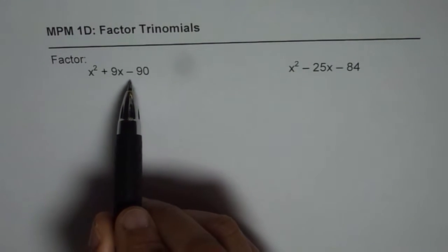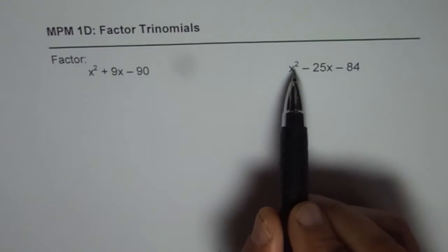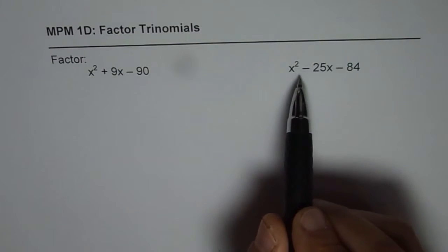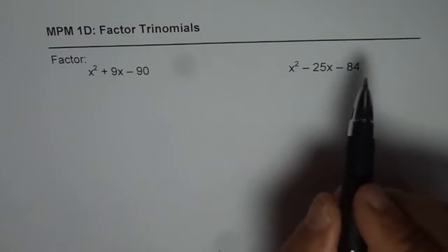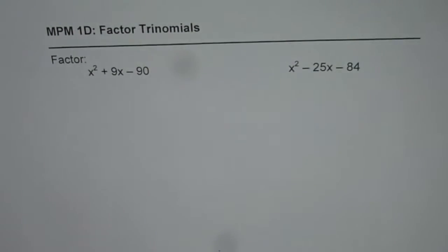So we have x squared plus 9x minus 90 as one equation. The other one is x squared minus 25x minus 84. I should say expression and that is a trinomial. So we have two trinomials here and to factor them we know the strategy.